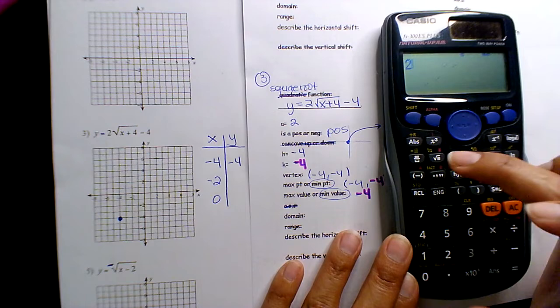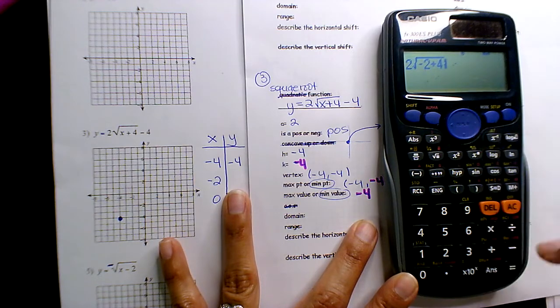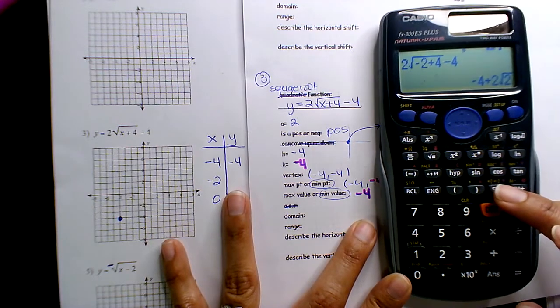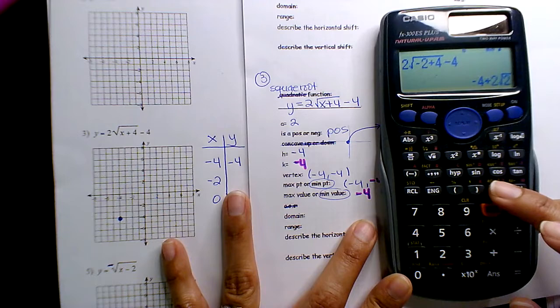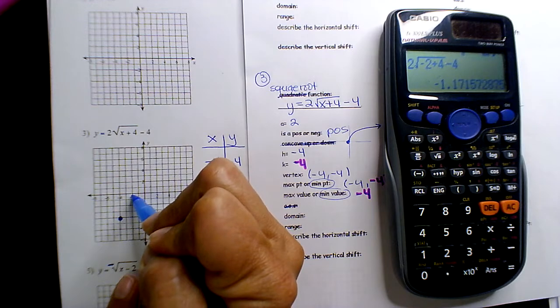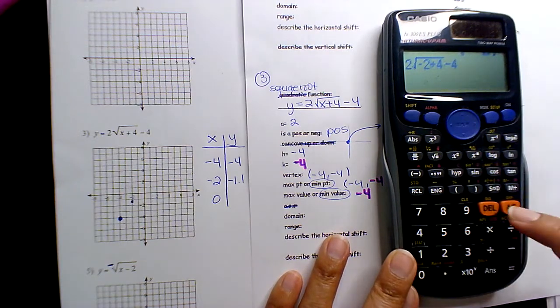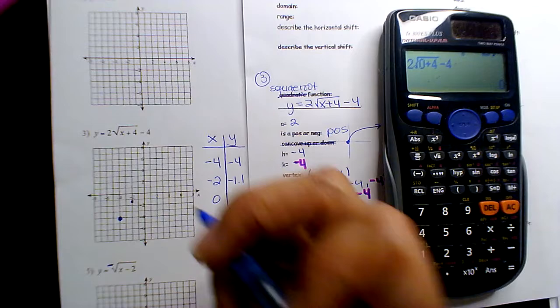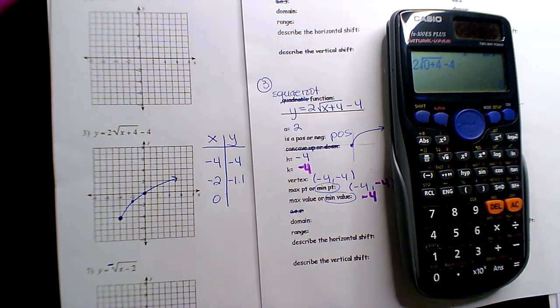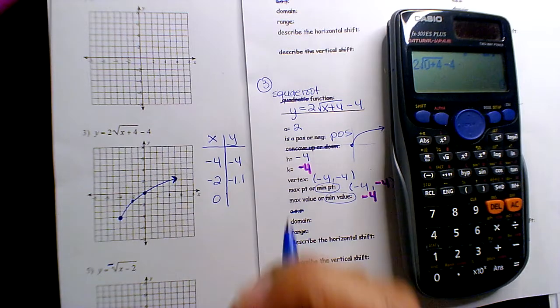So, two square root, negative two plus four, minus four, and I get, hit SD, right? That's what I got. And so, that comes out to negative one point one. So, negative two, negative one point one is like right there. And if I type in substitute zero, I get zero. Oh, that was easy. All right. So, here's my curve. Oh, zero, zero. Sorry.